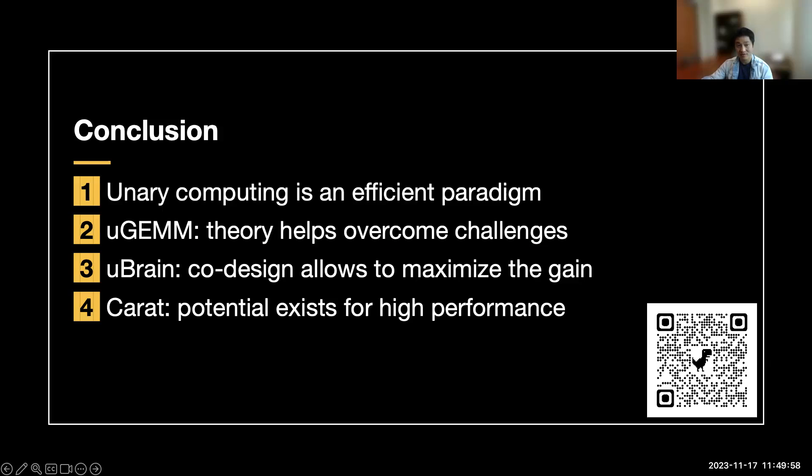Finally, we come to the conclusion of this talk. First, I think unary computing is definitely an efficient paradigm that has the potential to revolutionize the computation in this era of deep learning, no matter if it's on the edge or in the cloud. Second, the UGEM work shows that if we have a good theory, it can definitely help to overcome the challenges and make our life easier. Third is the UBrain design. While everyone is doing co-design now, even for unary computing, we can gain more with proper co-design. And the last one for the Caret work, we use temporal coding in the unary computing so that it does not lose any kind of accuracy, and it has a potential for high performance computing instead of just edge computing. That's the end of this talk and I'm really excited. Welcome any questions.